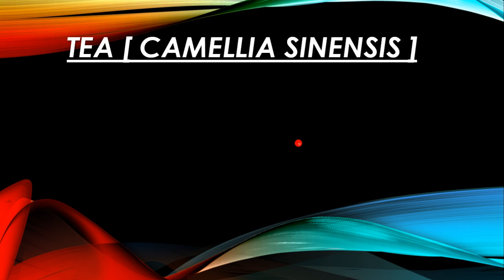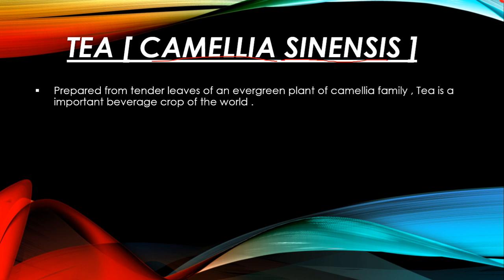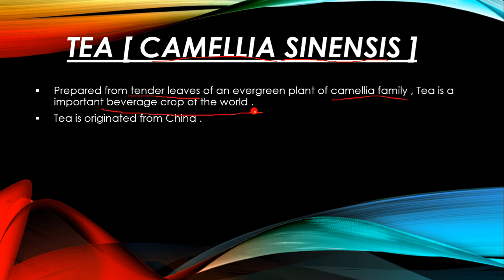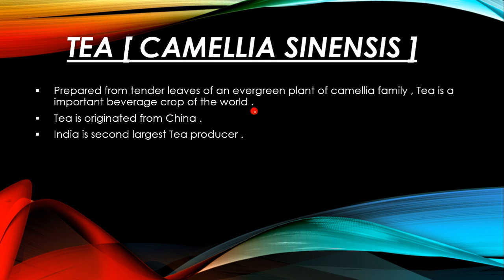Now we will talk about tea. The scientific name of tea is Camellia sinensis. It is made up of tender leaves of evergreen plants from the Camellia family. Tea is an important beverage and crop of the world. Tea originated from China. India is the second largest tea producer after China.